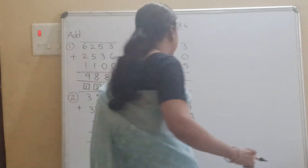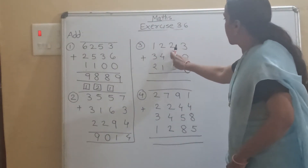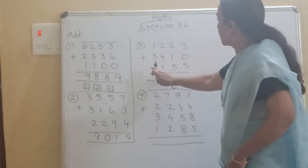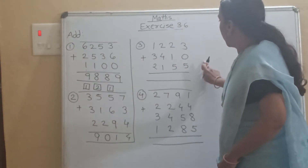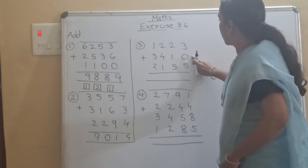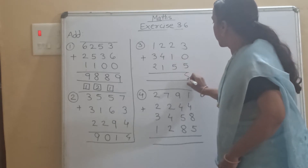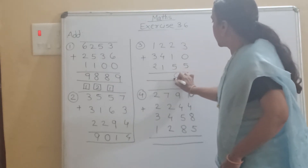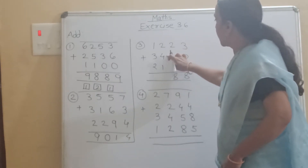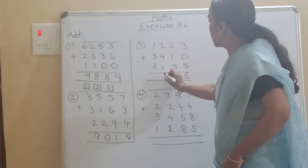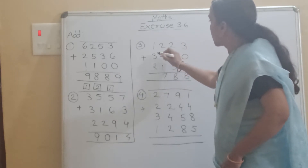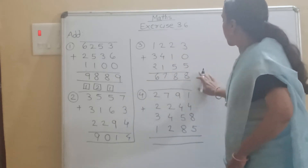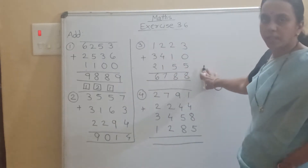Now see the third example: 1223 plus 3410 plus 2155. So 5 plus 0 is 5, 5 plus 3 is 8. Then 5 plus 1 is 6, 6 plus 2 is 8. Then 4 plus 1 is 5, 5 plus 2 is 7. Then 3 plus 1 is 4, 4 plus 2 is 6. So the answer is 6788.